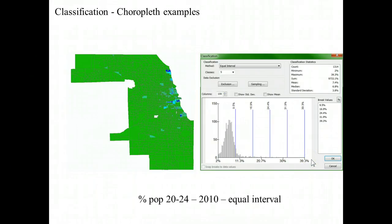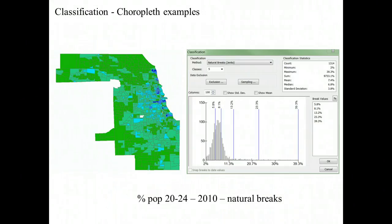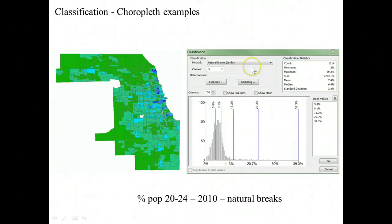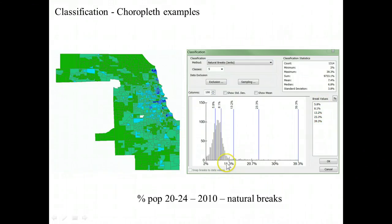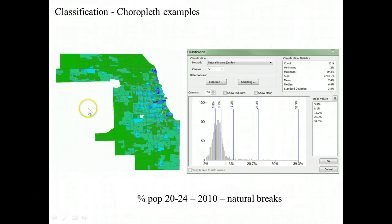Here's a second example with the exact same dataset — a different decision by the analyst — now using natural breaks. Natural breaks uses the dataset to establish break values between classes in the largest gaps within the dataset, the natural gaps. You can see the resulting break values, the histogram with where the breaks occur, and the resulting map. Same dataset, natural breaks — completely different map.